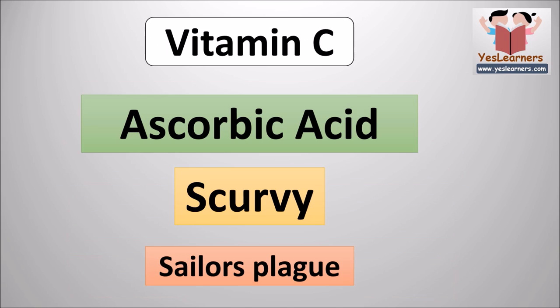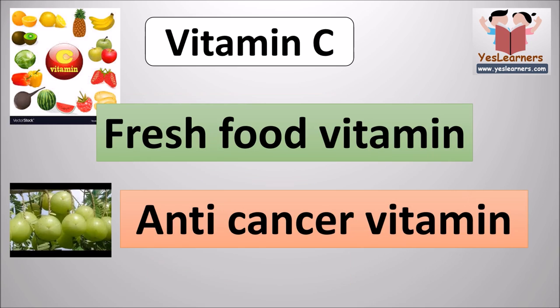The scientific name of vitamin C is ascorbic acid. The deficiency of vitamin C causes scurvy. The disease scurvy is also known as sailor's plague. Vitamin C is known as fresh food vitamin and anti-cancer vitamin. Vitamin C is lost during cooking and is absent in milk.